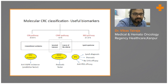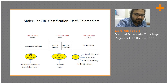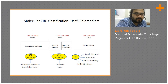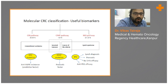BRAF mutation indicates aggressive disease and has prognostic significance. MSI status has both predictive and prognostic implications: anti-PD-1 immunotherapy efficacy is high in MSI-high tumors, while 5-FU efficacy is low. MSI-high status is commonly associated with Lynch syndrome, making Lynch syndrome diagnosis relevant in these patients, further underlining its predictive and prognostic significance.